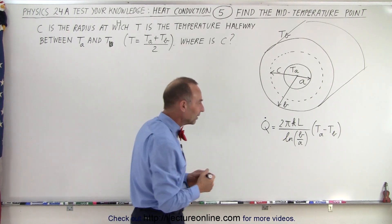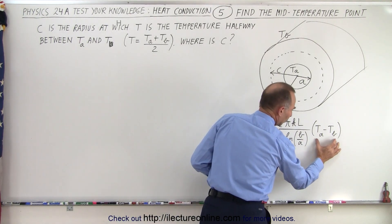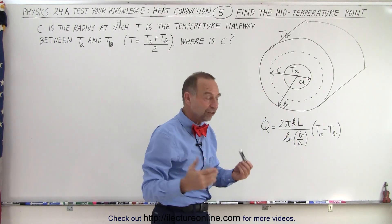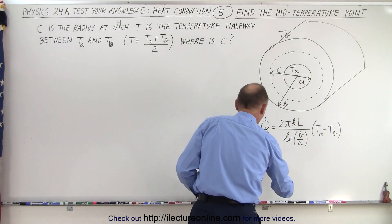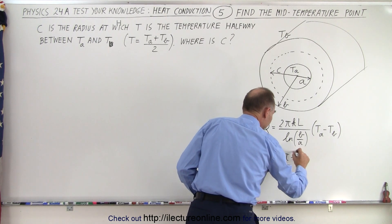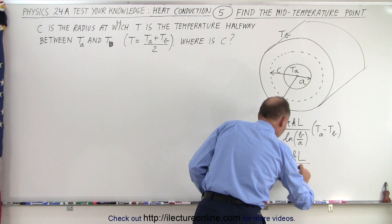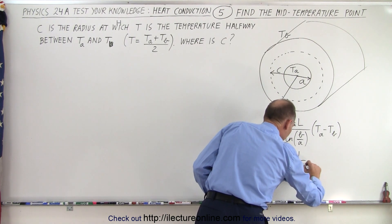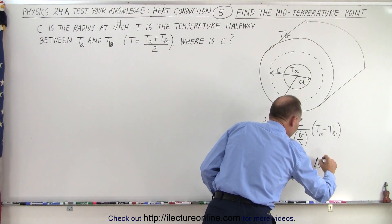What we're going to do is write the equation slightly differently. We're going to write this as simply the difference in the temperature. So we're going to write this as Q dot times the delta T.